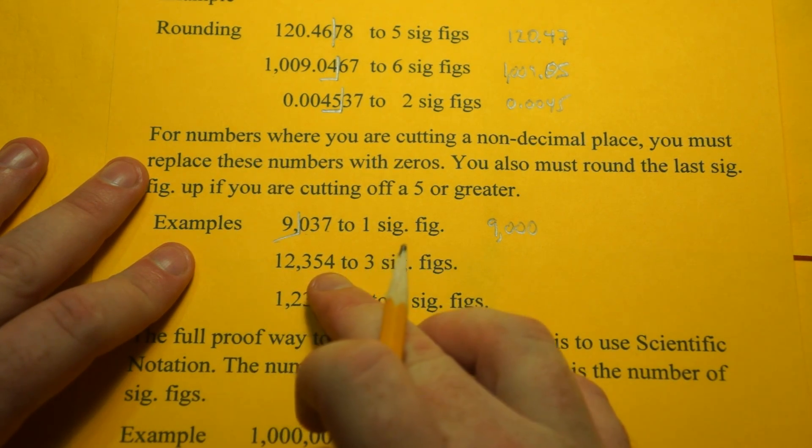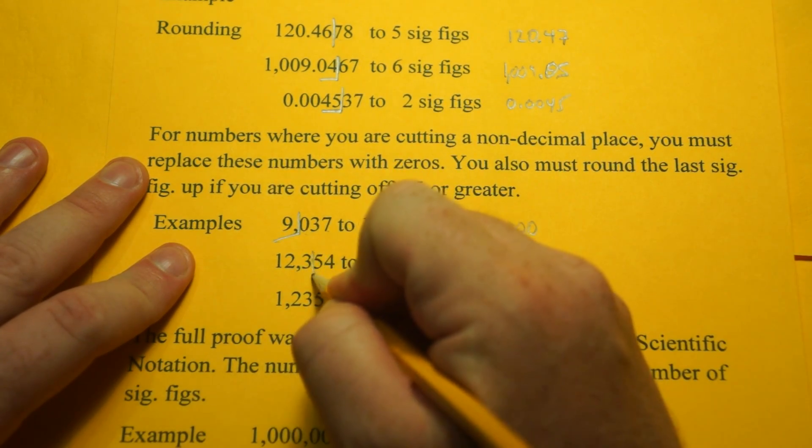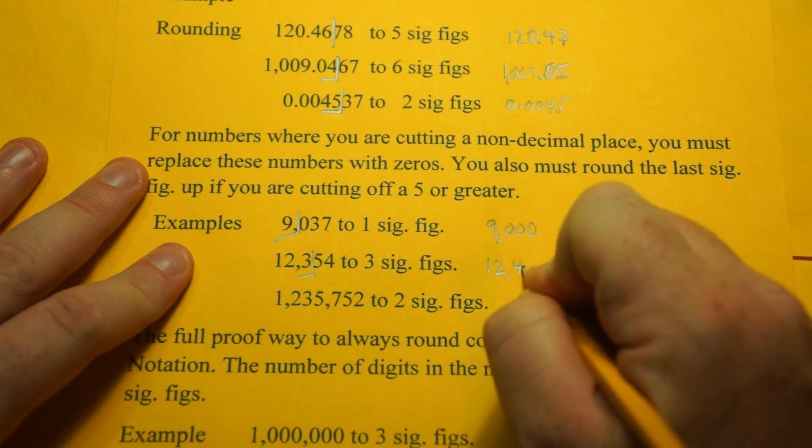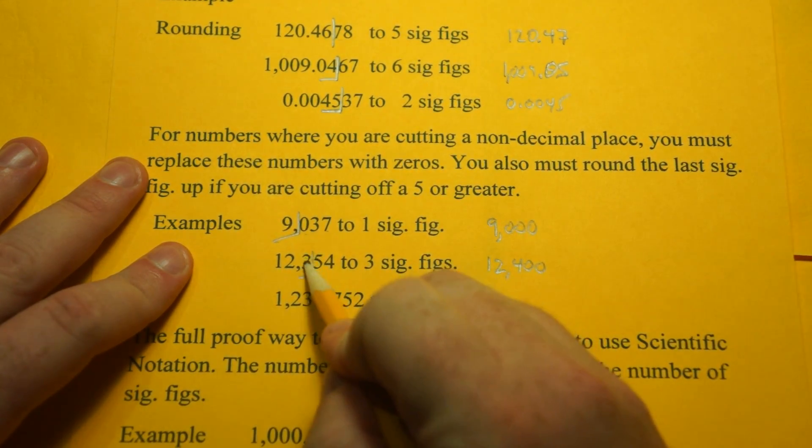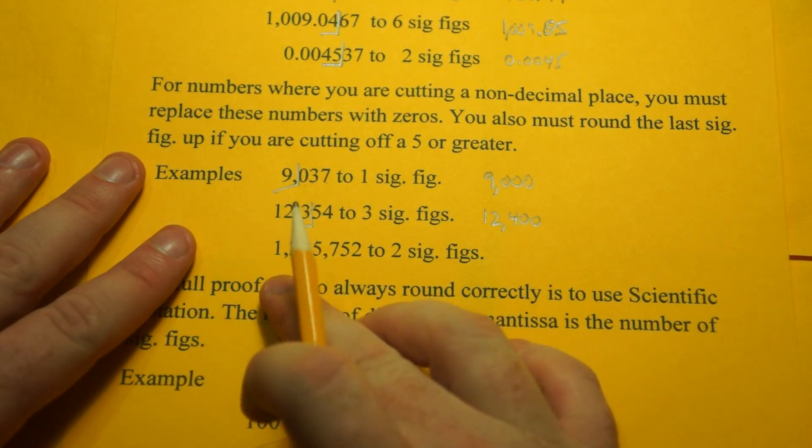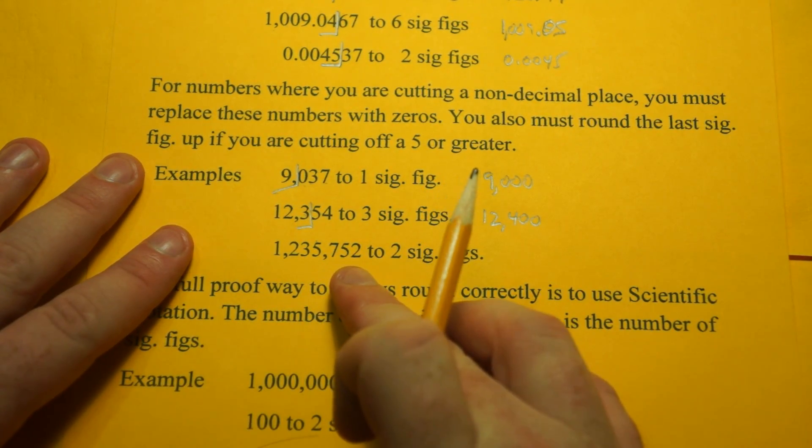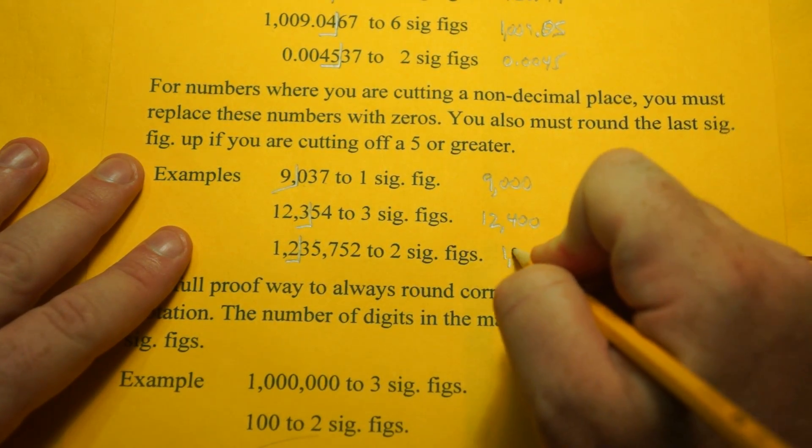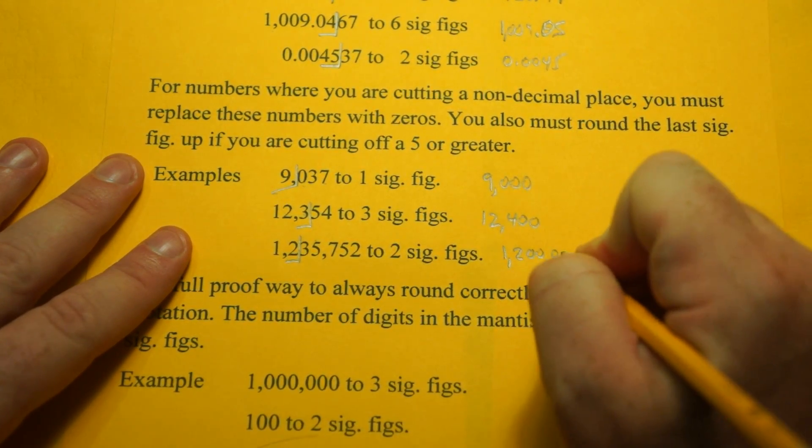So 12,354. We're going to cut off the 5, 4. So 12,400. Remember, if we cut off a 5, this number has to go up by 1. And 1,235,752 to 2 sig figs is 1,200,000.